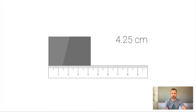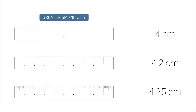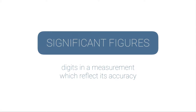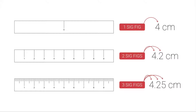I'm always guessing on that last digit in every single one of these rulers, but notice that when my instrument got more specific, I was able to get more digits in my measurement. With greater specificity of my measuring tool, I'm able to have more digits. These are called significant figures — significant figures are digits in a measurement which reflect its accuracy. In the first measurement there's one significant figure, the second has two, and the third has three.